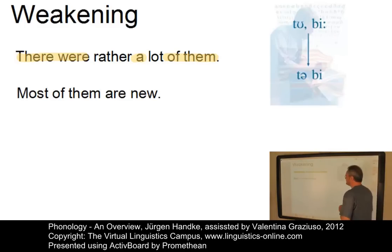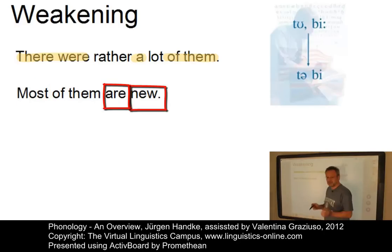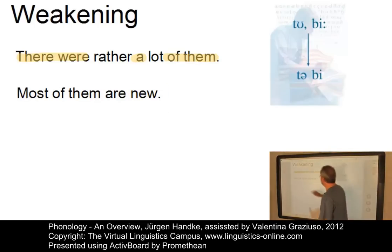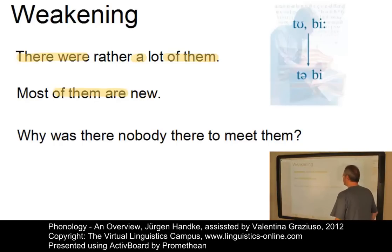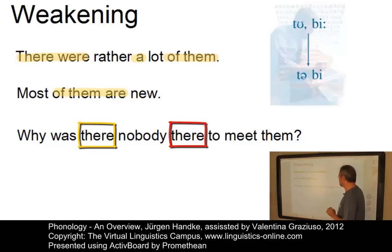Here is our next example. Each word in isolation: 'Most of them are new.' And in conversational English: 'most of them are new' — and then we have three weak forms. Our final example is especially interesting because here we have the same word occurring as a weak form and as a strong form in the same utterance — and that is, of course, the word 'there.'